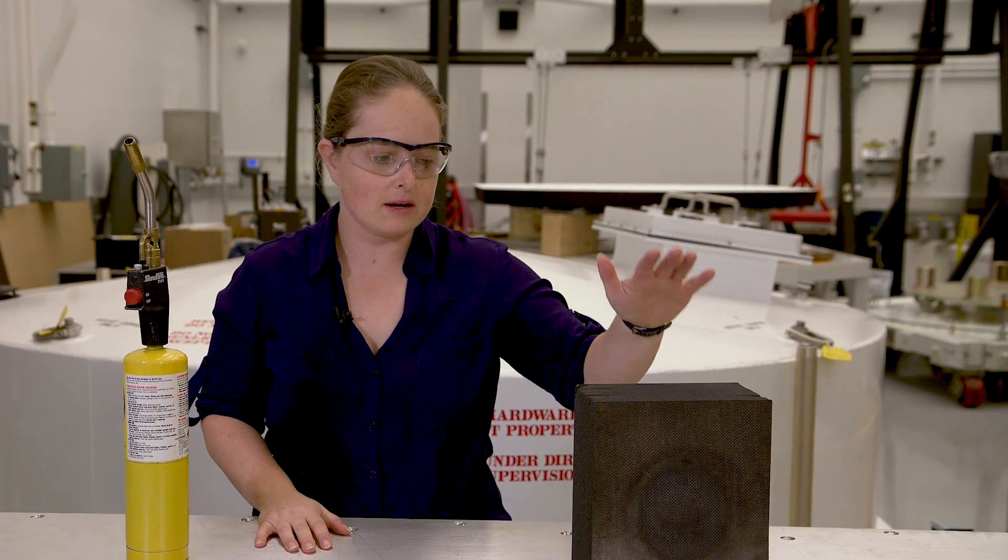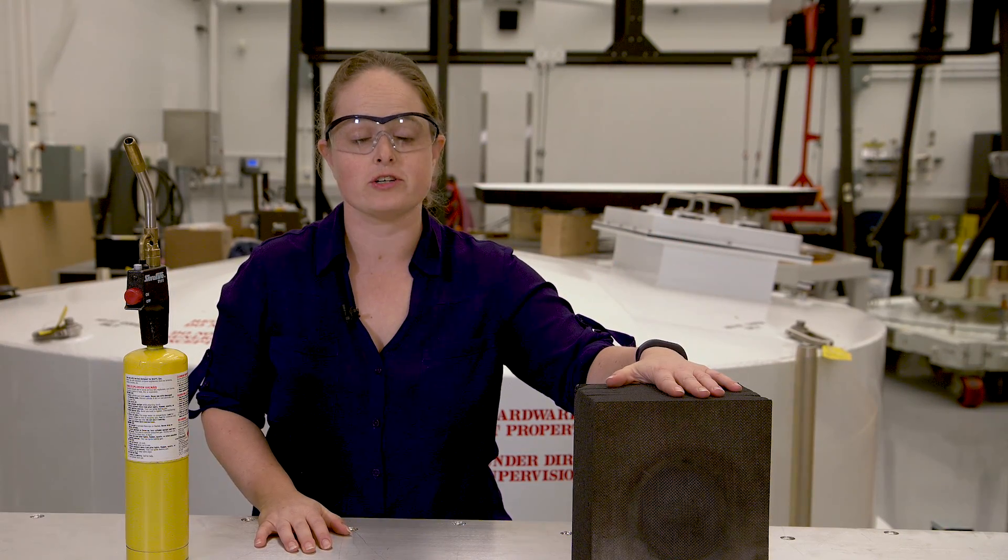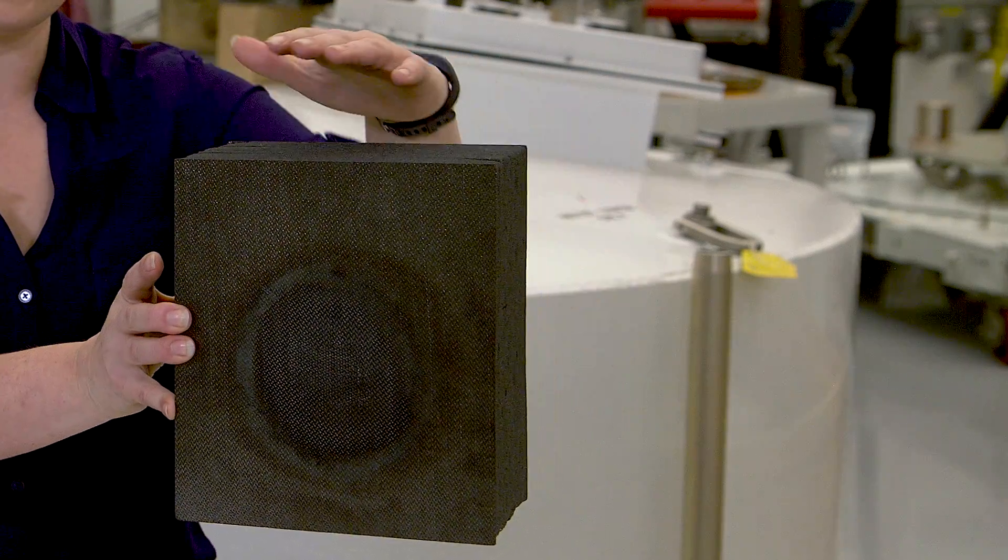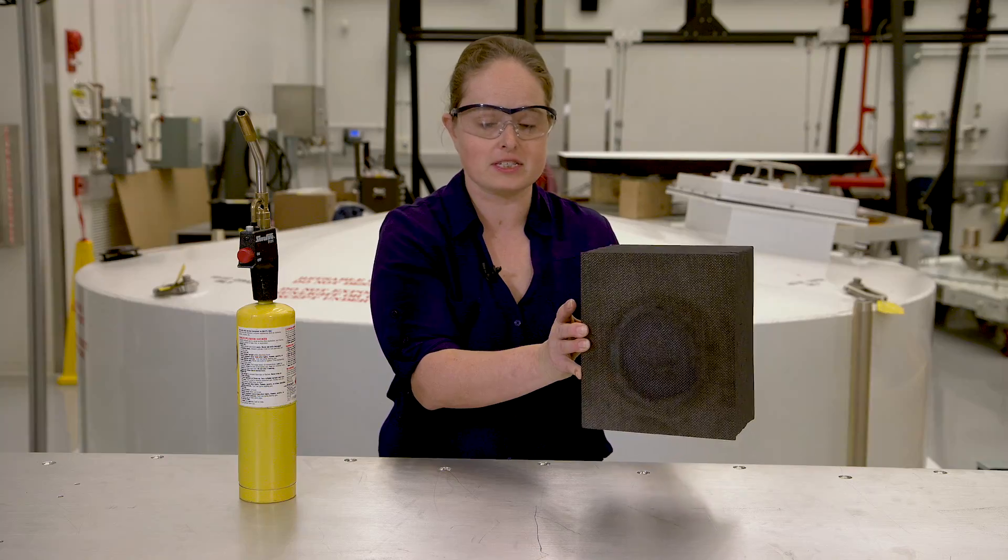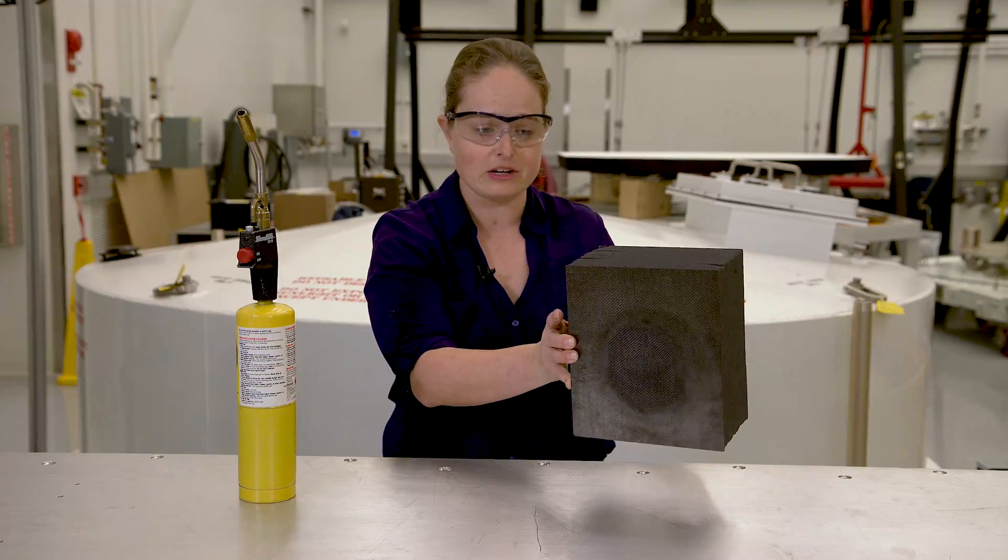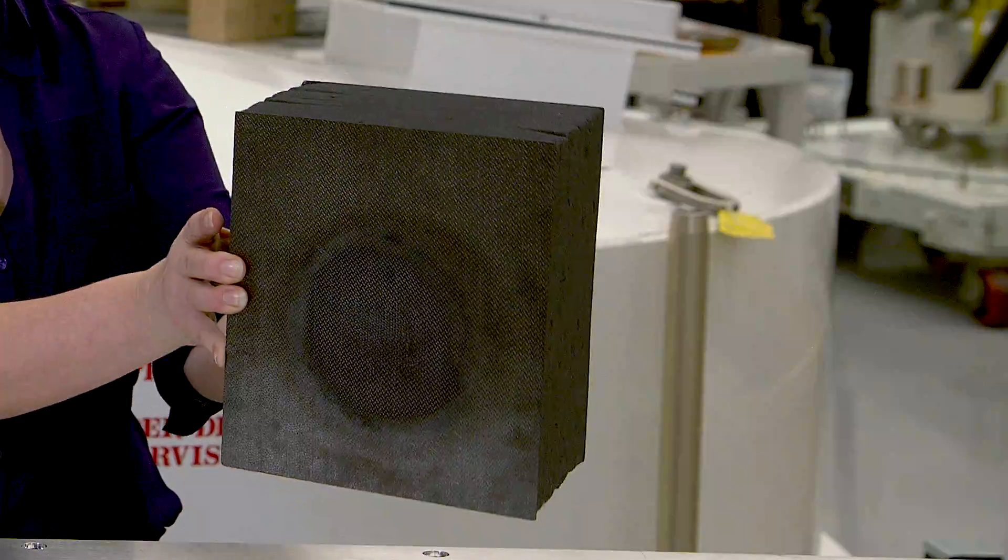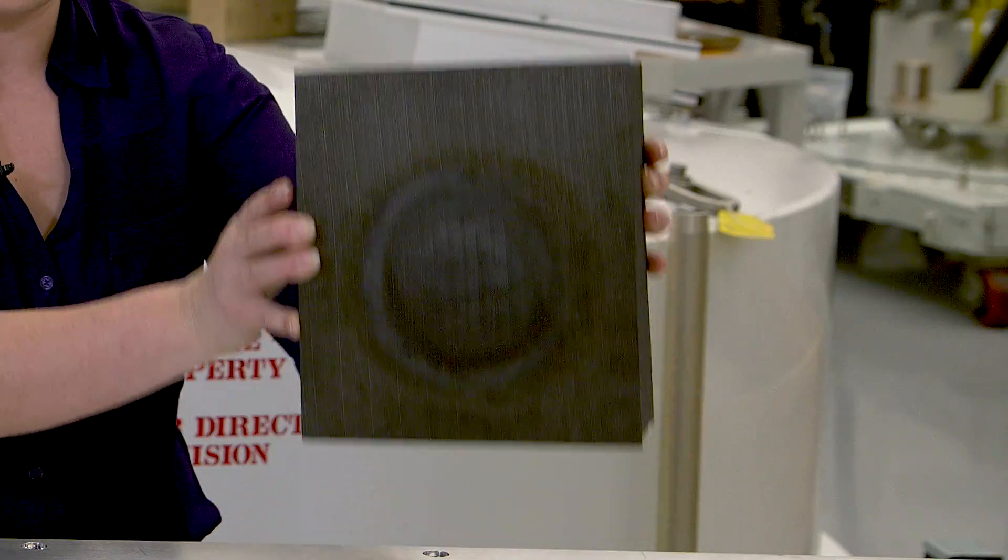Here we have a piece of the heat shield for Parker Solar Probe, which is a sandwich panel made of carbon—that's like the graphite epoxy you might find in your golf clubs or tennis rackets—some carbon foam, and then another piece of carbon on the back. It's very lightweight, as you can see.